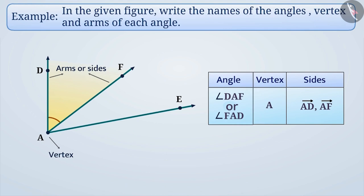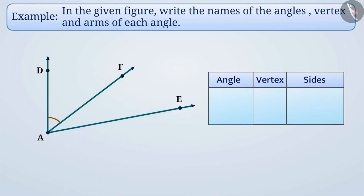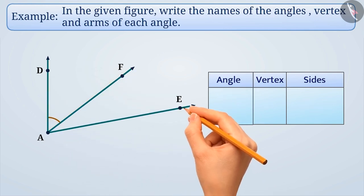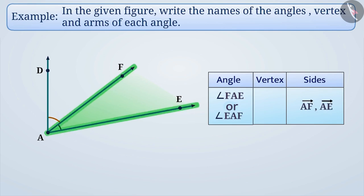In this figure, ray AF and ray AE make angle FAE or angle EAF. The arms and sides of this angle are ray AF and ray AE, and the vertex is point A.